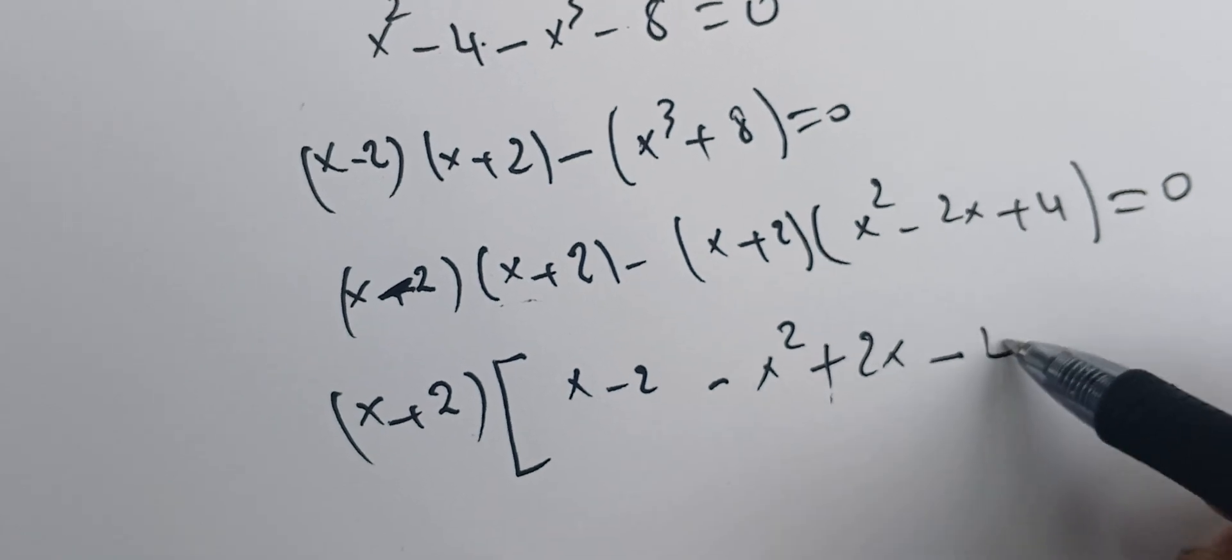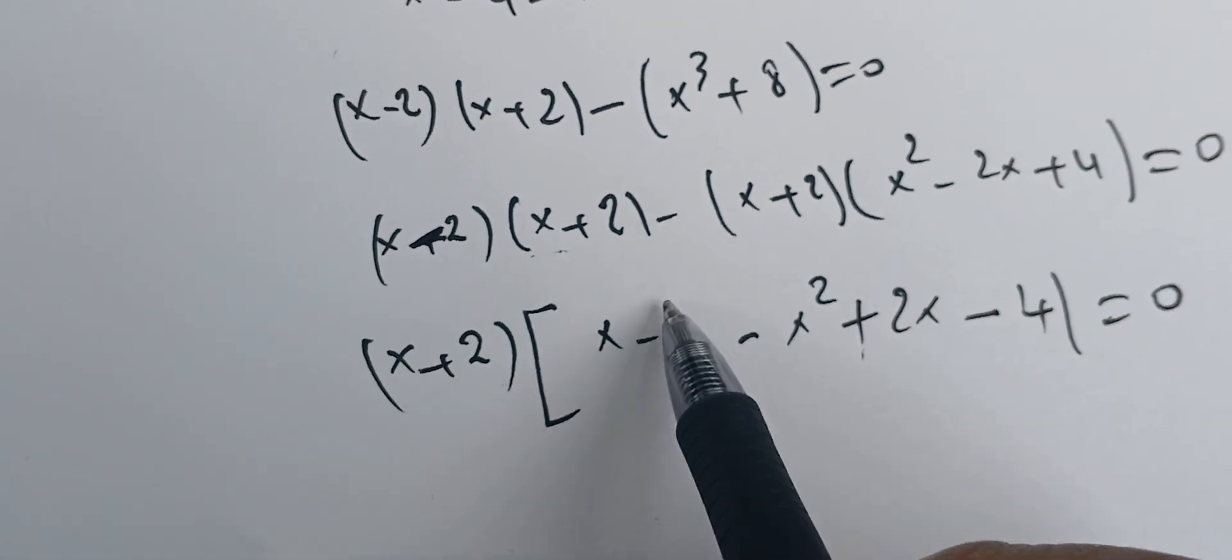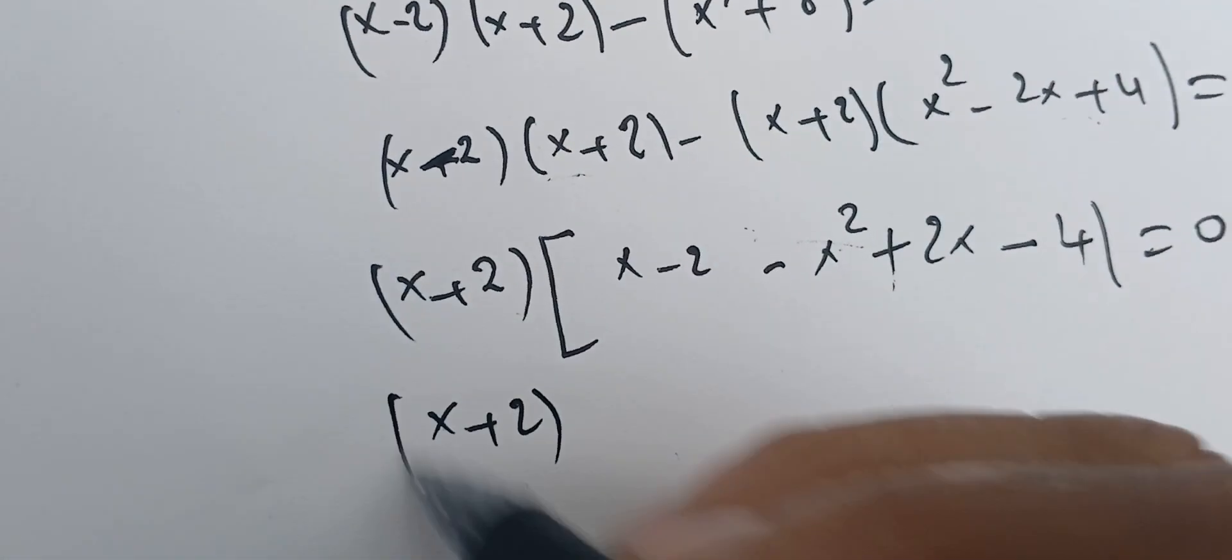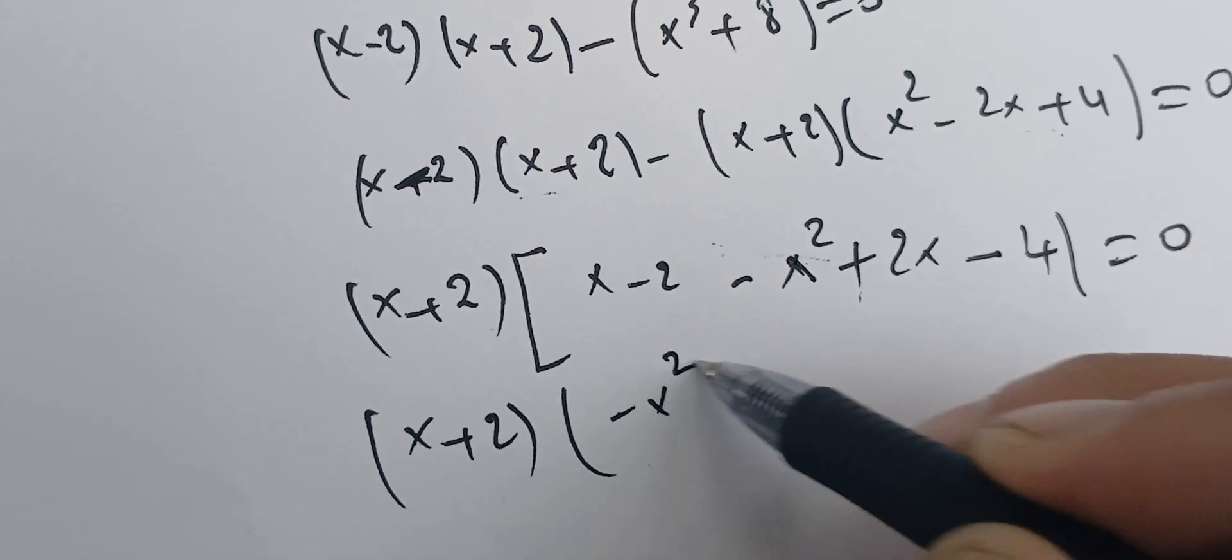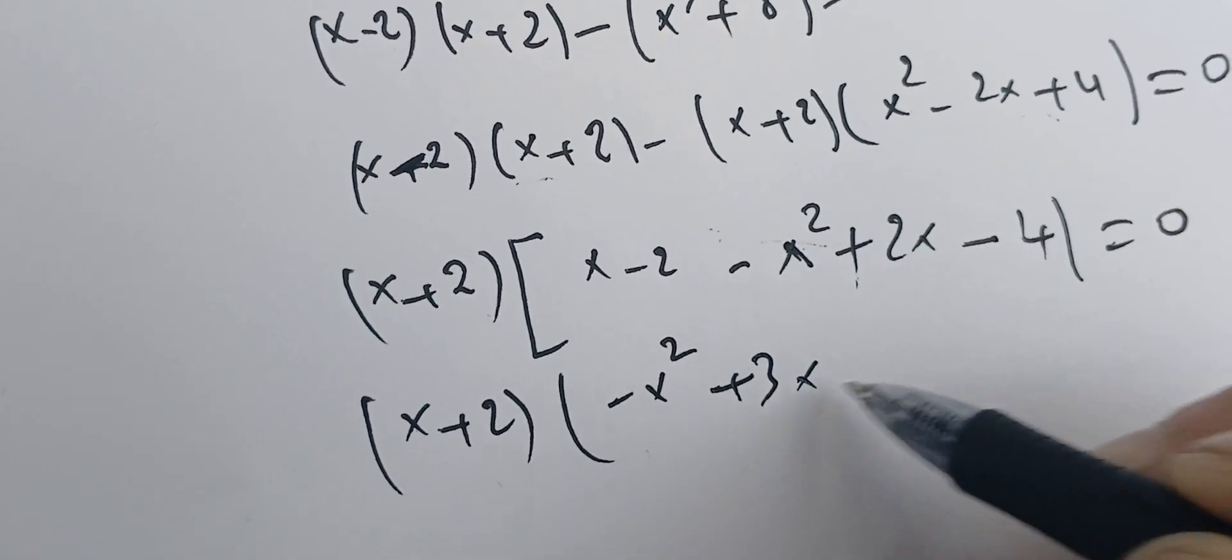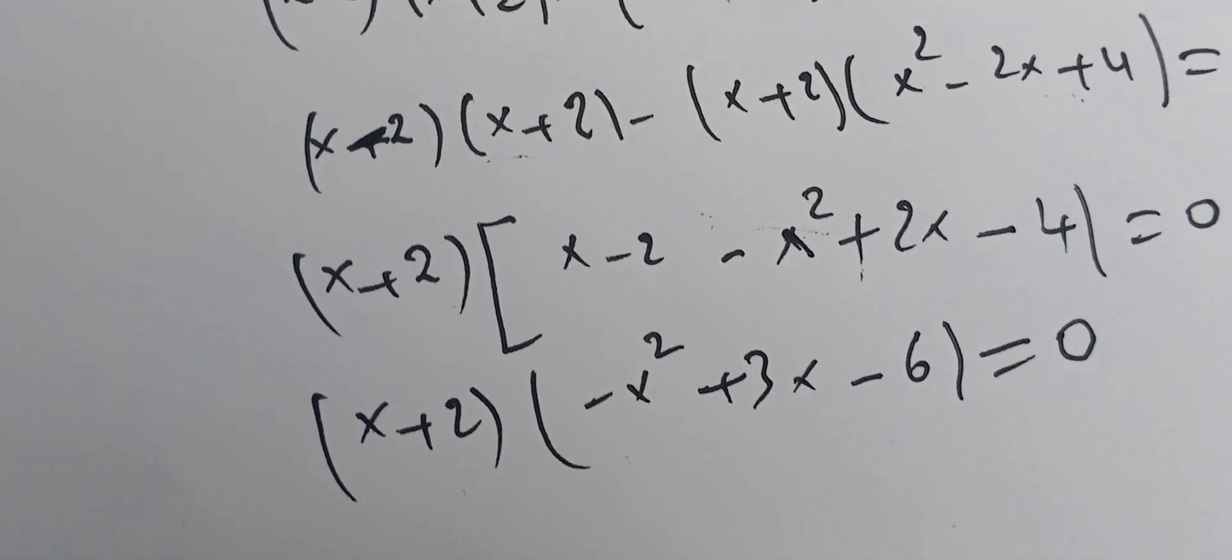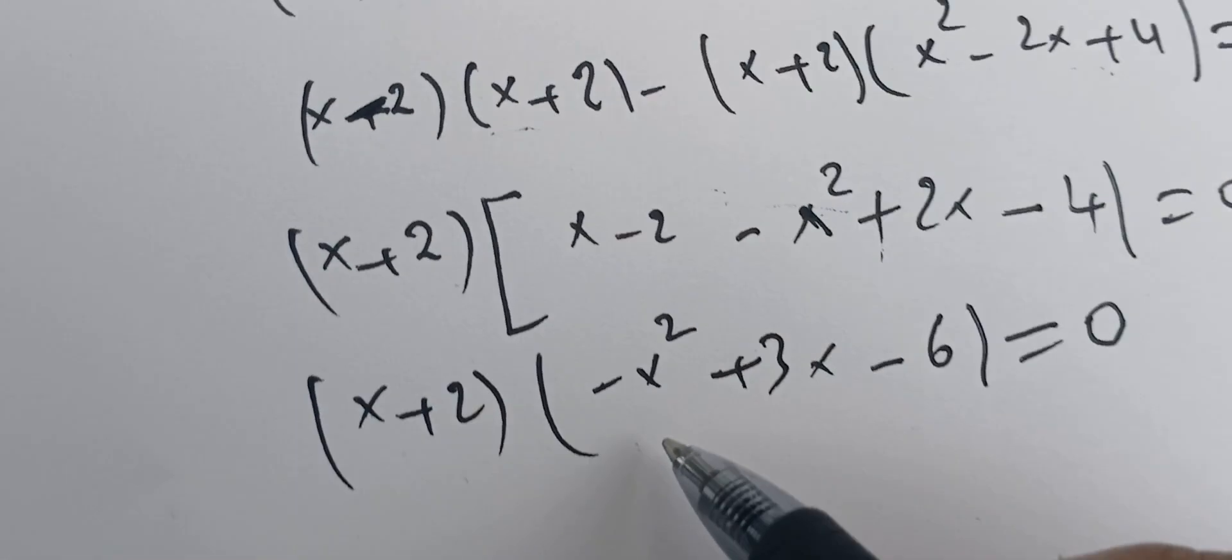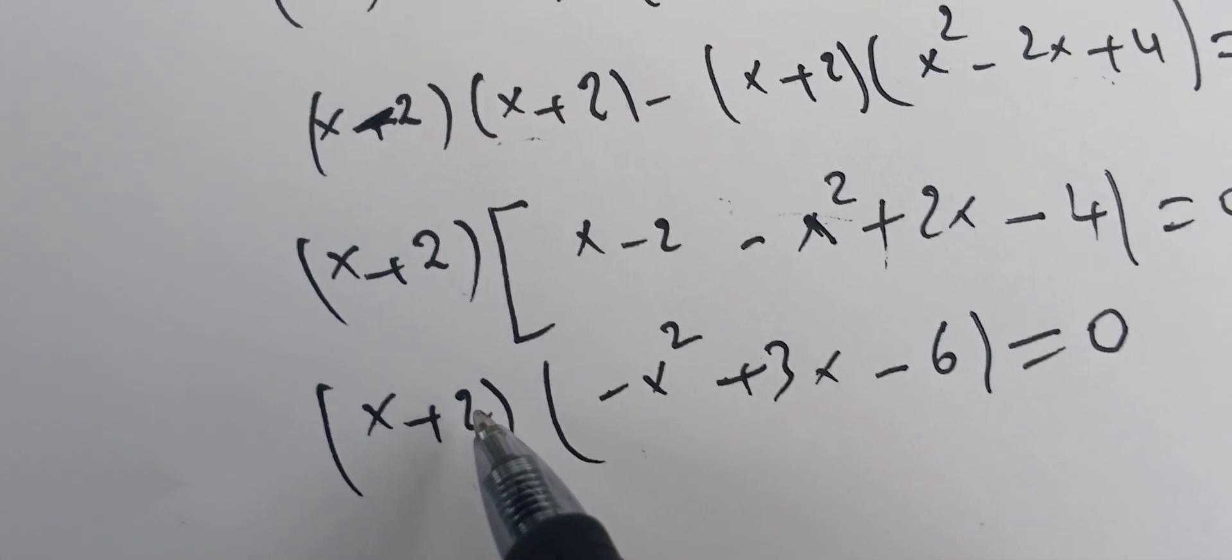I have this minus here affecting the sign. So I have x plus 2 times the remaining expression equals zero. I can see the solutions now - this is a quadratic and this is a first degree polynomial.